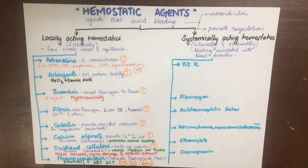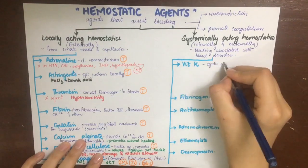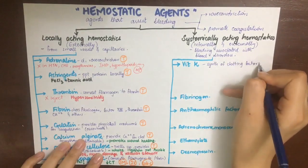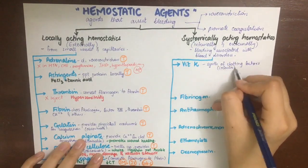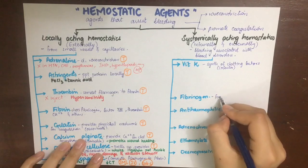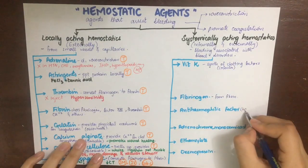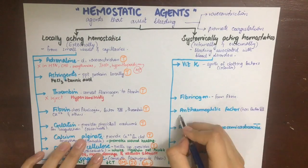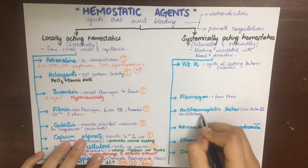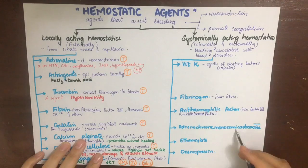Vitamin K is required for the synthesis of clotting factors 2, 7, 9, and 10. It acts as a co-factor for gamma carboxylation of glutamic acid residues of these clotting factors. Fibrinogen will form fibrin. Anti-haemophilic factor consists of factor VIII and von Willebrand factor, and thus contributes to coagulation and clot formation.